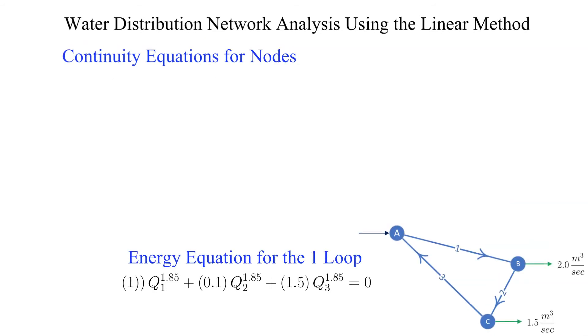Now let's apply continuity for each node starting with the nodes that have specified demands. We must use the already assumed flow direction to define the flows into and out of the nodes.